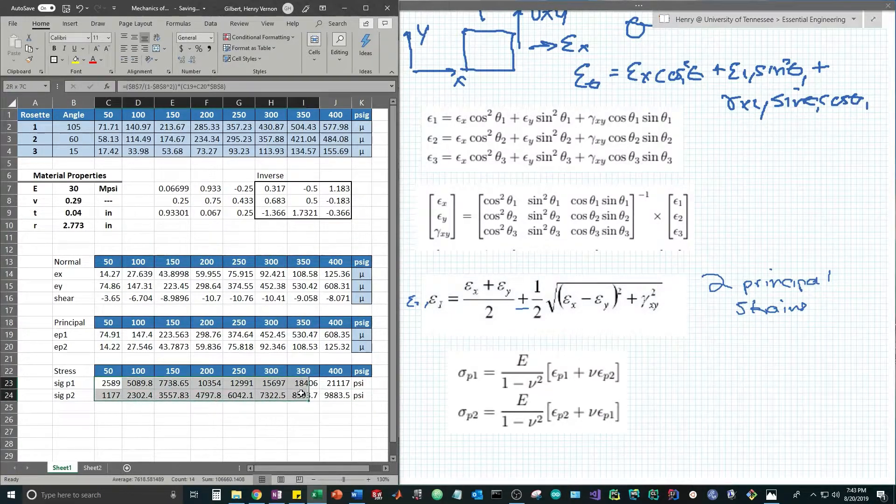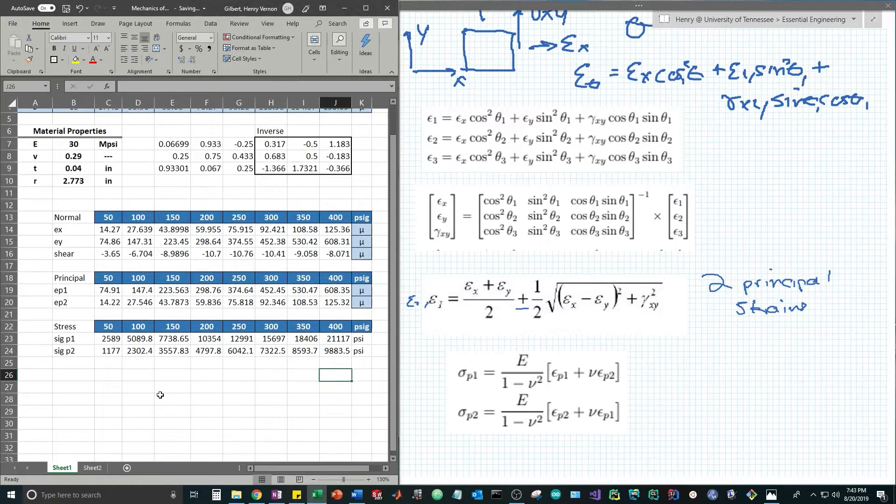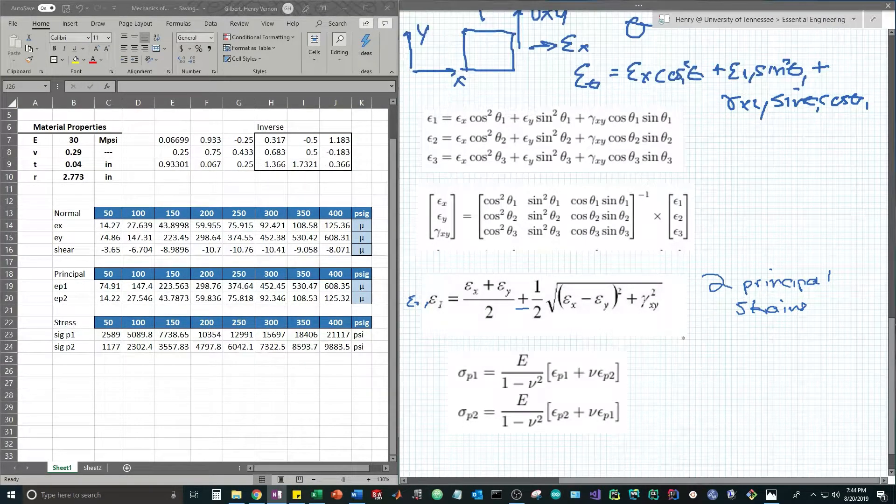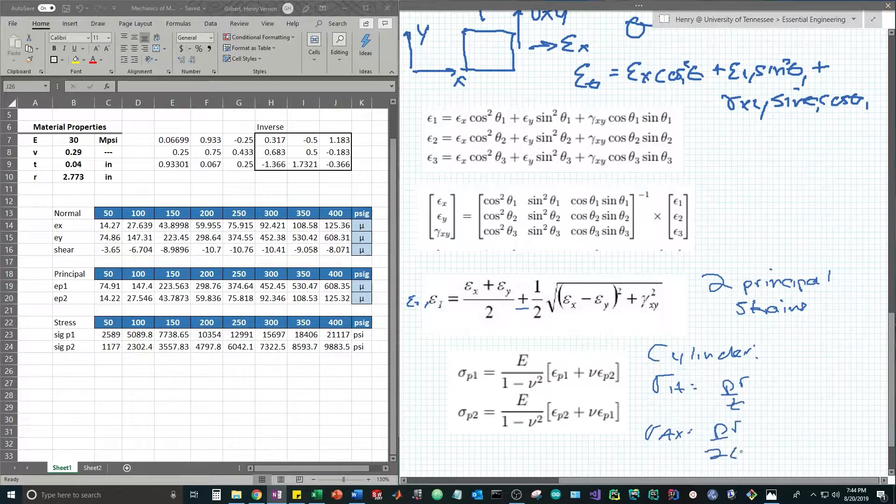Now these numbers, how do we know they're right? A good way to check is to actually use the pressure vessel theory which states that in a cylindrical pressure vessel, we know that the hoop stress is PR over T, where P is the applied pressure, R is the radius of the pressure vessel, and T is the wall thickness. And we know that sigma axial is PR over 2T.